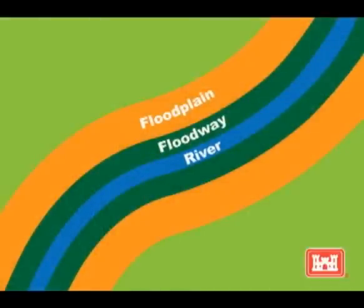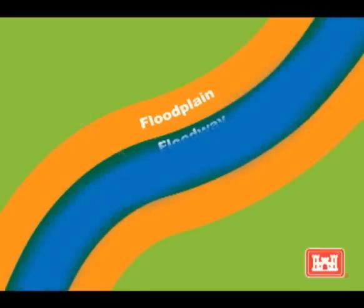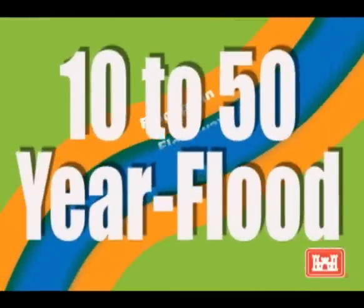This map represents a typical stream or river profile. The blue is where the water naturally flows. The green area represents the natural floodway — this is the area that floods often during high water events, and has been carved out over time to accommodate high flows of water. Flooding in this area has a two to ten percent chance of occurring each year, or as most people understand it, a ten to fifty year flood.